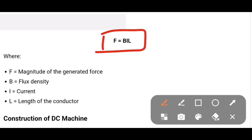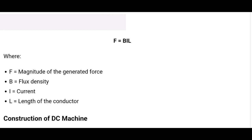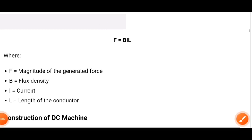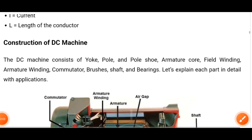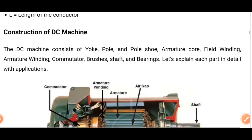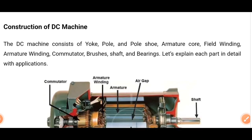The formula to calculate the force is F = BIL, where B is the flux density, I is the current, and L is the length of the conductor. In this way we can calculate the force. Now coming to the construction part.